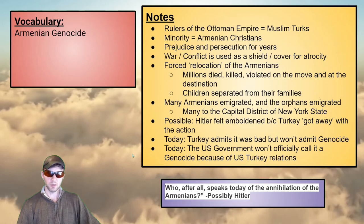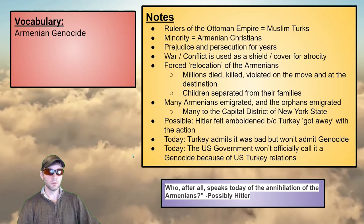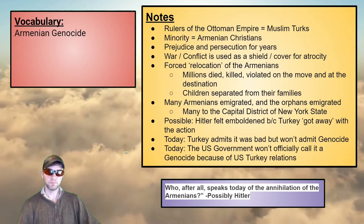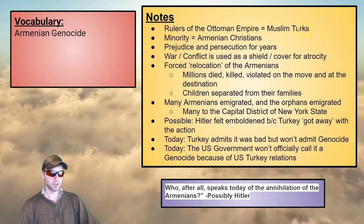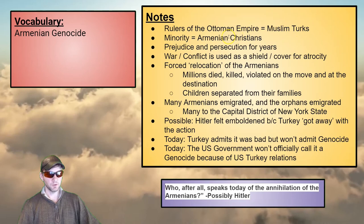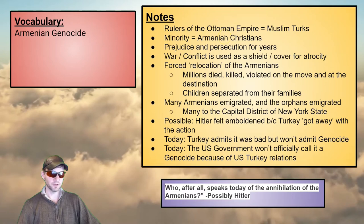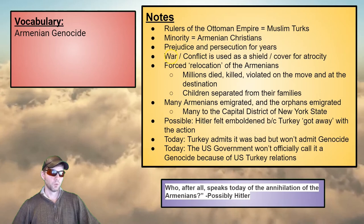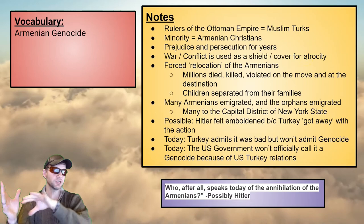Knowing there was a World War I genocide is better than most people know. The rulers of the Ottoman Empire were the Muslim Turks. Within the empire there was a forced minority — Armenian Christians — with a different ethnicity and religion. For years before WWI, there was prejudice and persecution. World War I was just the cover. War and conflict is often used as a shield or cover for atrocity because the rest of the world has something else to worry about, attention shifts — which is literally what happened during the Holocaust in World War II.